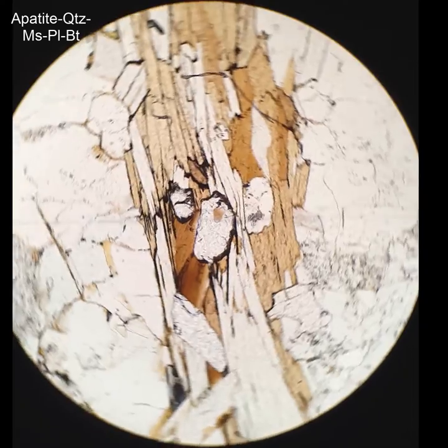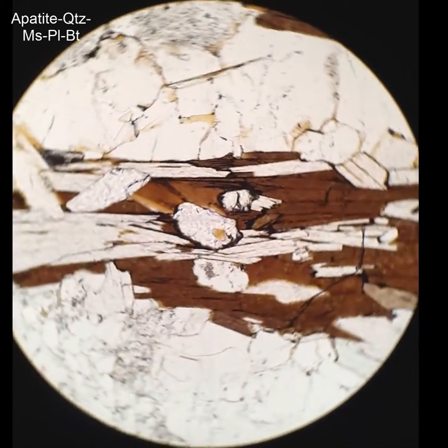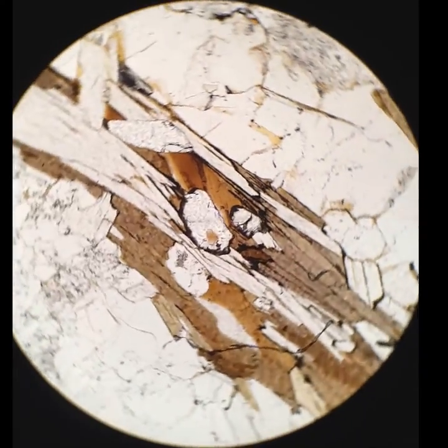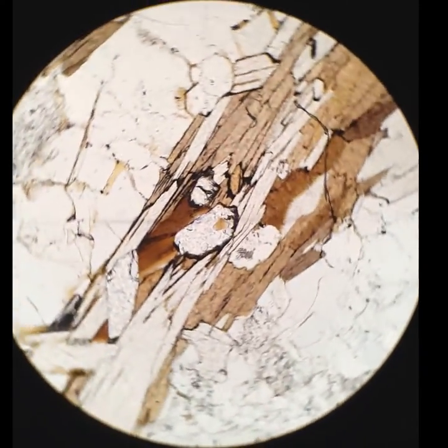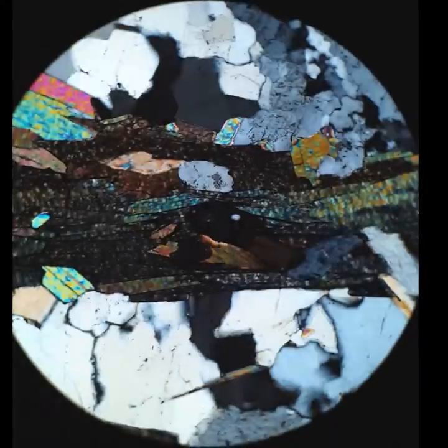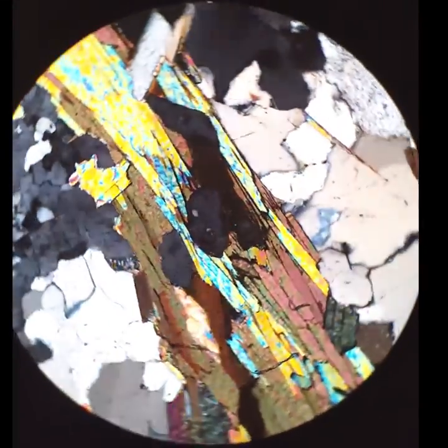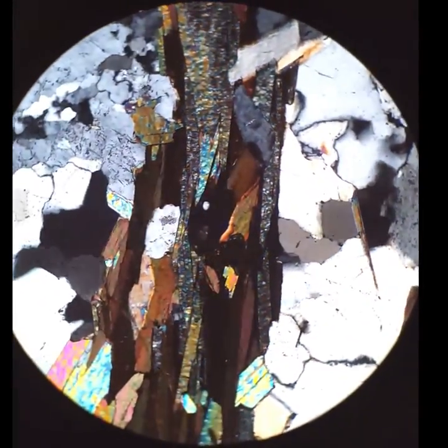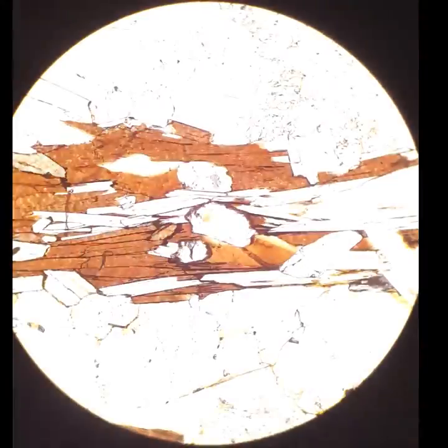Here's another apatite almost in the center of the field of view. Another case in point, you can tell it has higher relief than the biotite and the muscovite that are around it. You cross the polars, and at first it looks kind of black, and you think, well, maybe that's a garnet, but then as you rotate the stage, it's got a very faint interference color there, and so then you know it's just an apatite that's kind of masquerading as a garnet. When I look at it again, I realize it does have lower relief than garnet.